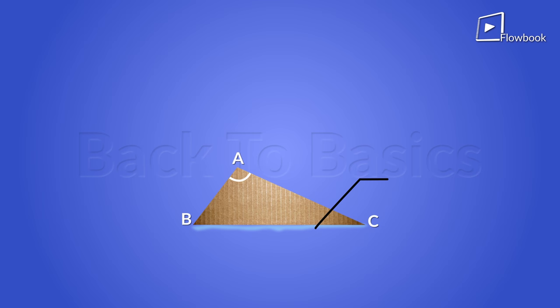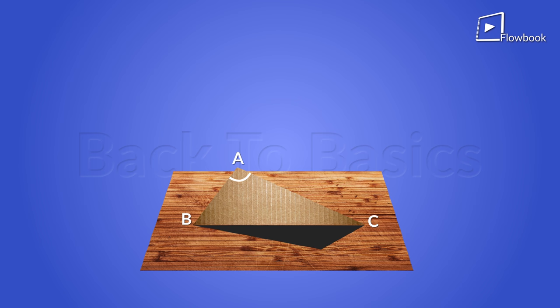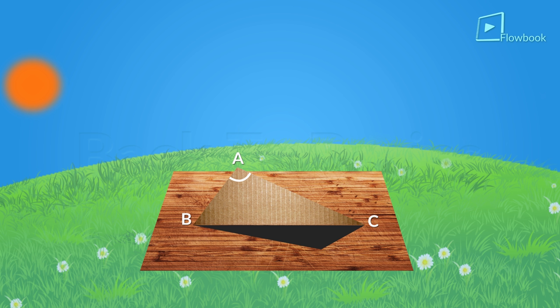Then you are done. Place your board with triangle on level ground in an open space which gets direct sunlight throughout the day. But place the base BC of the triangle in the north-south direction with B pointing to the north.